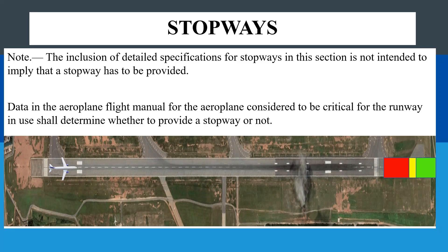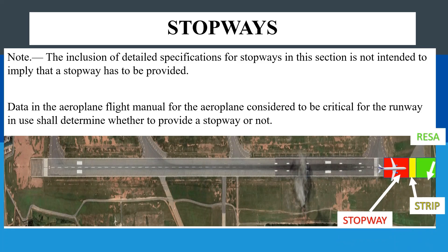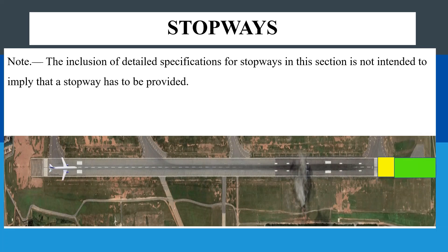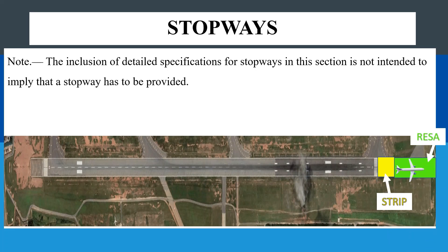Where a stopway is provided, you will locate it between the threshold of the runway and the strip; beyond the strip you will have the RESA. As you can see on screen, there is a stopway beyond the threshold before the strip and RESA. Where a stopway is not provided, the strip comes right after the threshold, and any action by the pilot to stop an aircraft that has already initiated the takeoff process will end up in the RESA.